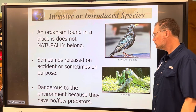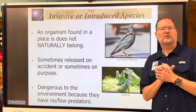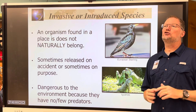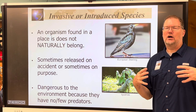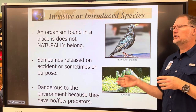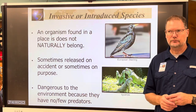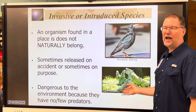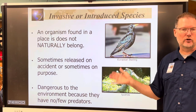The European starlings were introduced by a fan of William Shakespeare. Around 1900, in New York City's Central Park, this person wanted to introduce every bird species mentioned in Shakespeare's plays. He brought 100 European starlings from Europe and released them in Central Park — and now they're everywhere. Both starlings and iguanas are destructive because they lack natural predators. They eat birds' eggs, take over nesting burrows, destroy gardens, and displace native birds.